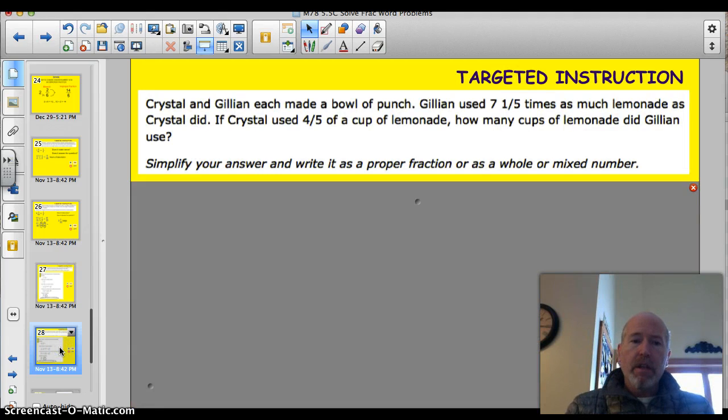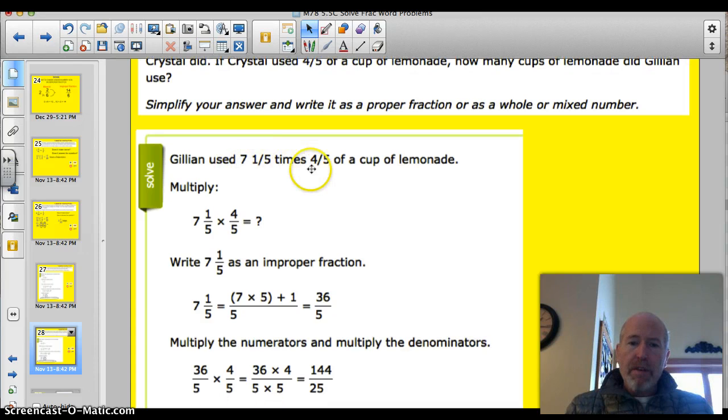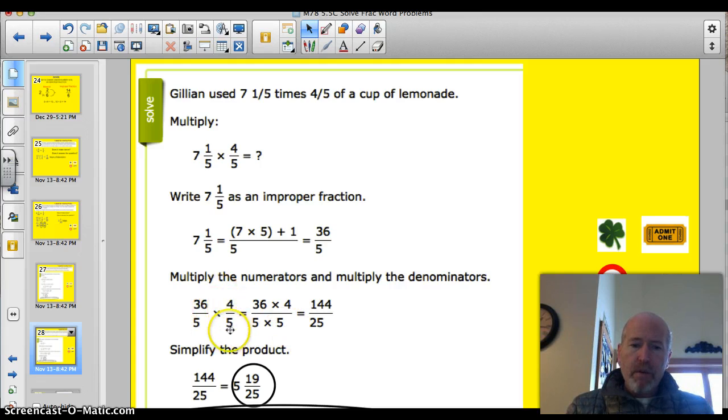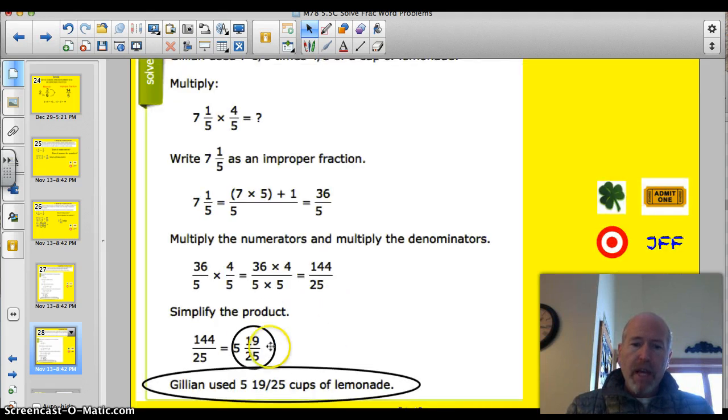Last question before the ticket. Crystal and Jillian made a bowl of punch. Jillian used 7 and 1 fifth times as much lemonade as Crystal did. If Crystal used 4 fifths of a cup of lemonade, how many cups of lemonade did Jillian use? Simplify your answer. Write it as a proper fraction or as a whole or mixed number. Go ahead and pause it and try this. Okay, I'm back. Let's just see. 7 and 1 fifth times 4 fifths, a cup of lemonade. So, here we go. Here's what we have to do. This one's okay. This one we're going to have to switch. So, 7 times 5 is 35 plus 1 will give us 36 fifths. So, we've got 36 fifths times 4 fifths. 36 times 4 is 144. 5 times 5, of course, is 25. Reduce that bad boy down. You've got 5 and 19 25ths. But, the answer, Jillian used 5 and 19 25ths cups of lemonade.